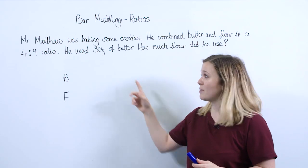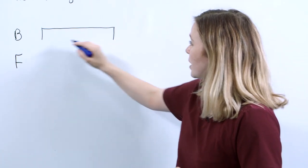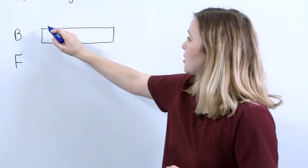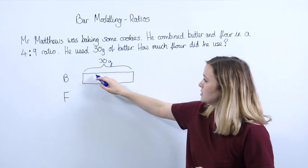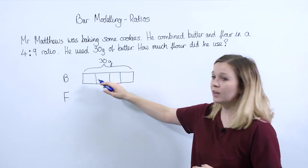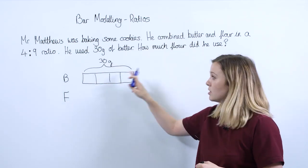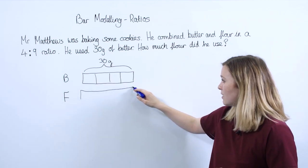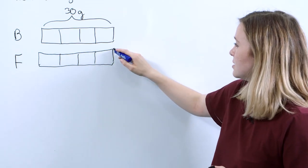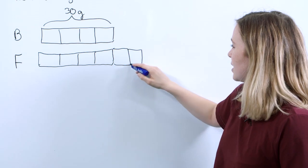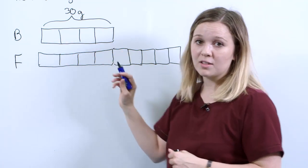We want to start by representing the amount of butter he used, because we know that was 30 grams. I'm going to draw a bar and label it to show that this is 30 grams. The ratio is four to nine, so I want to divide this into four equal parts, because for every four parts of butter, our ratio means he used nine parts of flour. These are equal parts, so we need nine equal-size parts to represent the flour — four parts butter and nine parts flour.